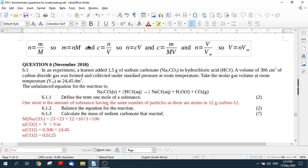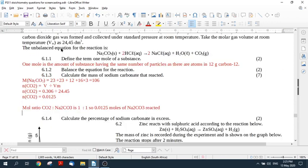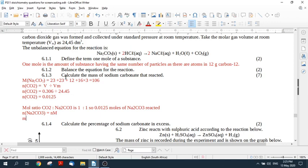Okay the mass of sodium carbonate is equal to N times m. So the mass of sodium carbonate is equal to 0.0125 times the mass. Remember I found it earlier 106.